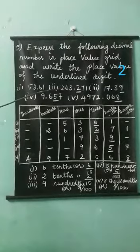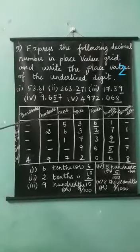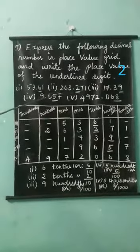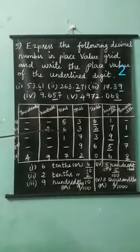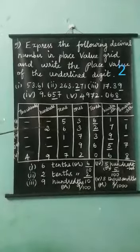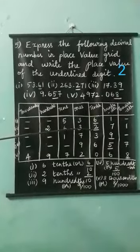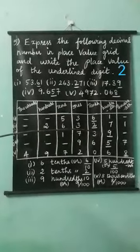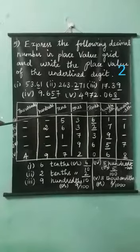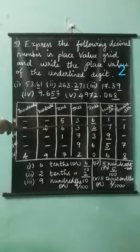Second one: 263.271. Here, write the place value. Three is one's place, six is tens place, two is hundreds place. After the decimal point, two is tenth place, seven is hundredth place, one is thousandth place.